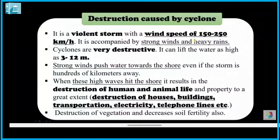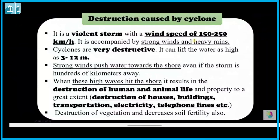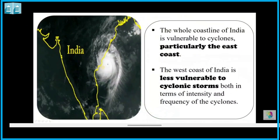When these high waves hit the shore, the result is massive destruction of human and animal life, and damage to properties — houses, buildings, transportation, electricity, and telephone lines. Even vegetation and soil fertility are destroyed. The whole coastline of India is vulnerable to cyclones, particularly the east coast, while the west coast is less vulnerable.